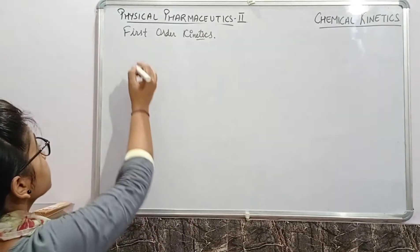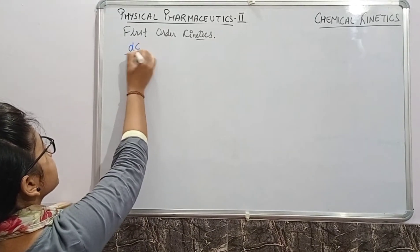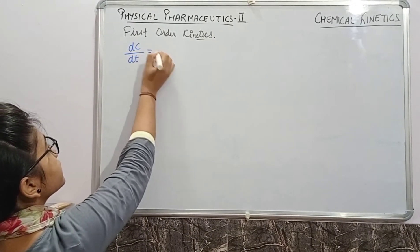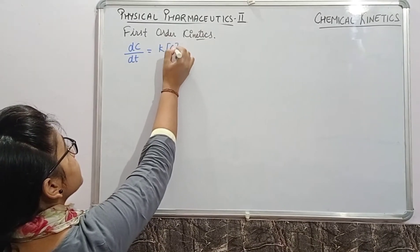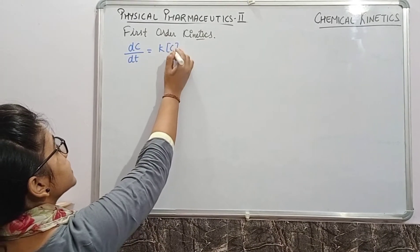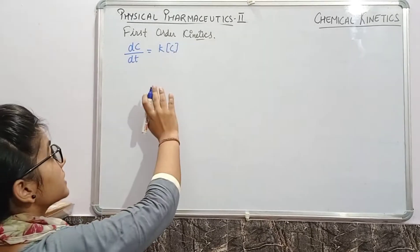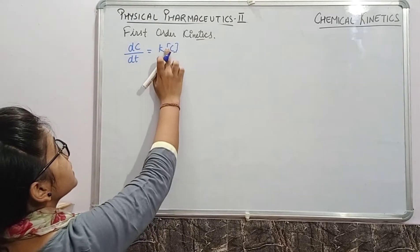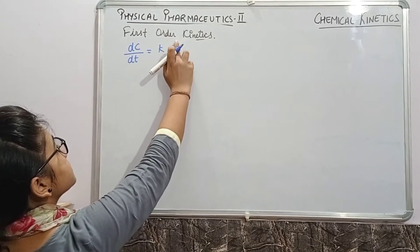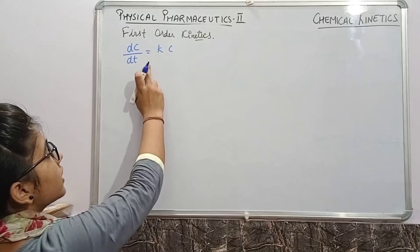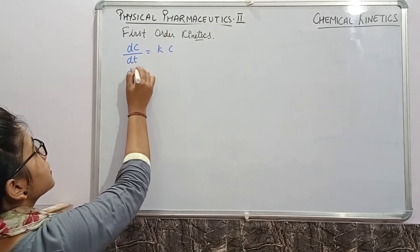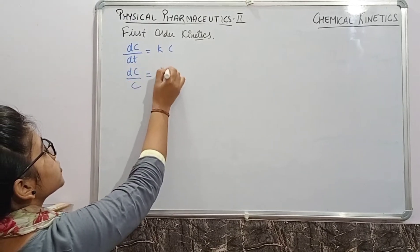According to that, the rate of reaction will be dc/dt equals k times c, where c is the power of concentration. We can write this in short form, which is the equation for first order kinetics.